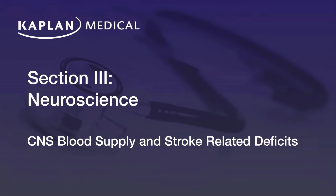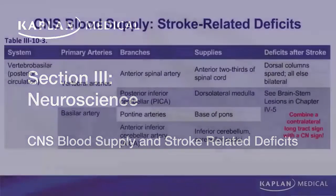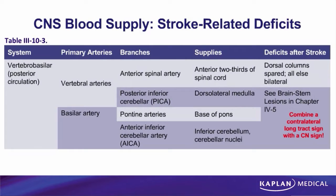Let's summarize the global effects of stroke-related deficits, depending on whether they involve branches of the vertebral basilar circulation, brainstem, or cerebral cortex circulation.